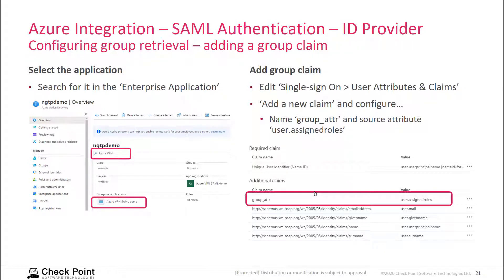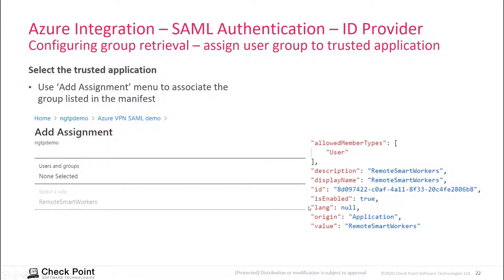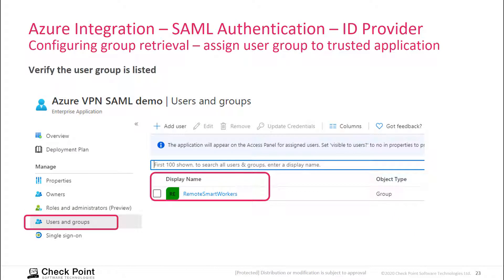Once you have edited the manifest file, go to the SSO section and add a group claim. Search for the application and open it under the Enterprise Applications view, then add a group claim. When adding the group claim, you also need to assign the group to the application, so that the group appears listed under Users and Groups for your Enterprise Application.